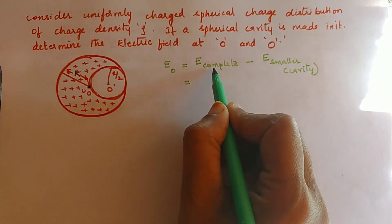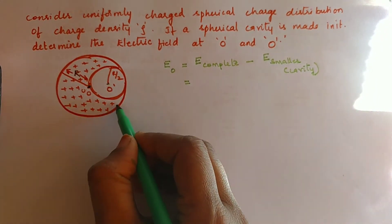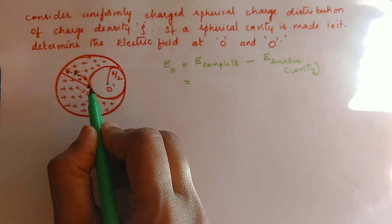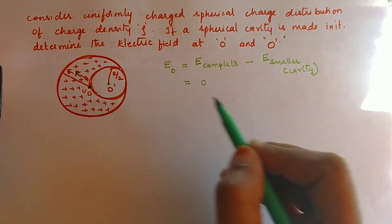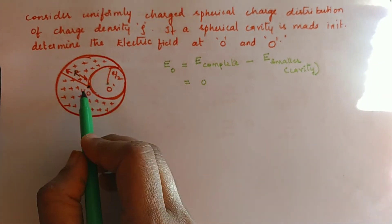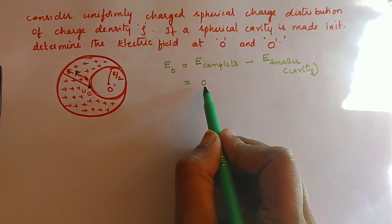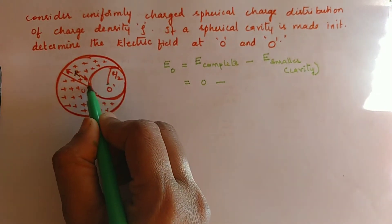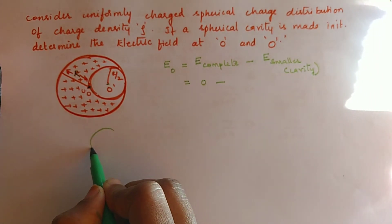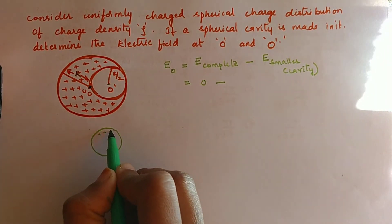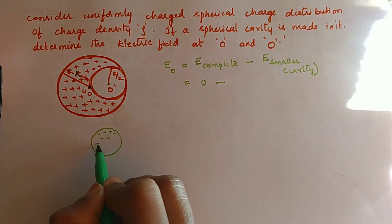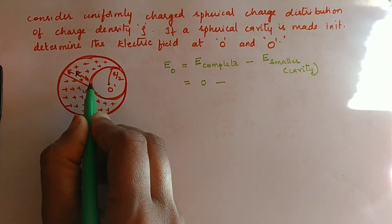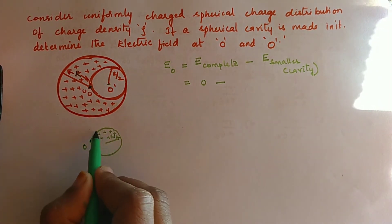For the total field: if the sphere is completely charged with volume charge density rho, the field at the center is zero — this is a standard result from Gauss's law. Now we subtract the field due to the smaller sphere. Imagine the cavity as a positively charged sphere of radius r/2. For this smaller sphere, point O is on its surface.